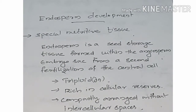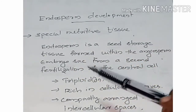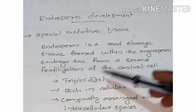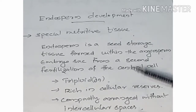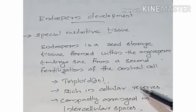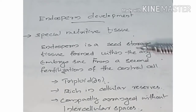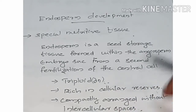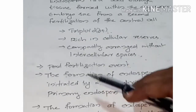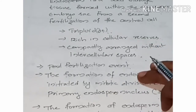Today we are going to study about endosperm development. Endosperm is a seed storage tissue formed within the angiosperm embryo sac. It is triploid in condition and rich in cellular reserves. Cells are compactly arranged without intercellular spaces. Endosperm is a special nutritive tissue.